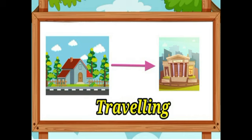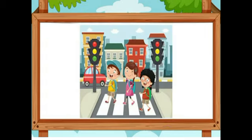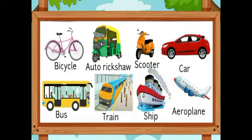Going to one place to another is called travelling. We can walk to places which are very close or nearby. For places which are far away, we need some vehicles such as bicycle, auto rickshaw, scooter, car, bus, train, ship, aeroplane, etc. The different ways of travelling from one place to another are known as means of transport.